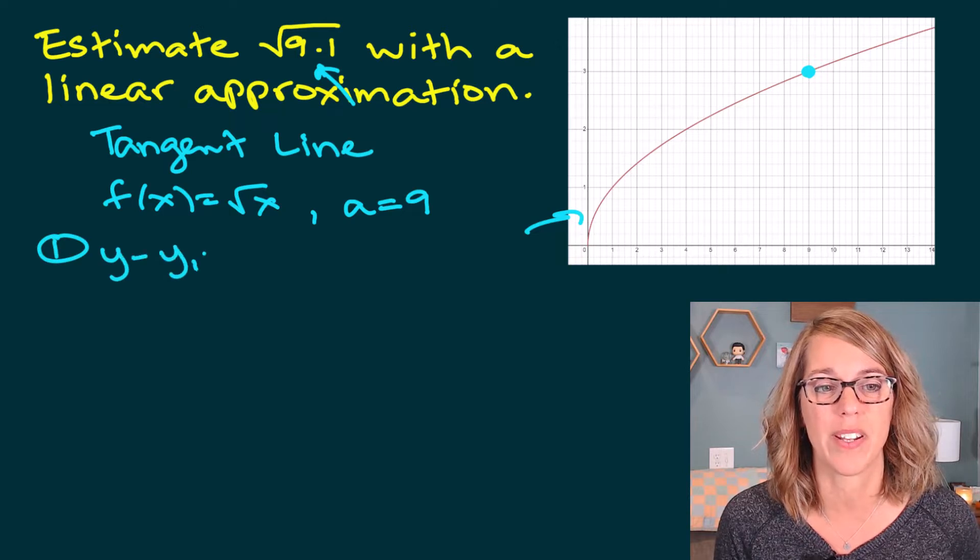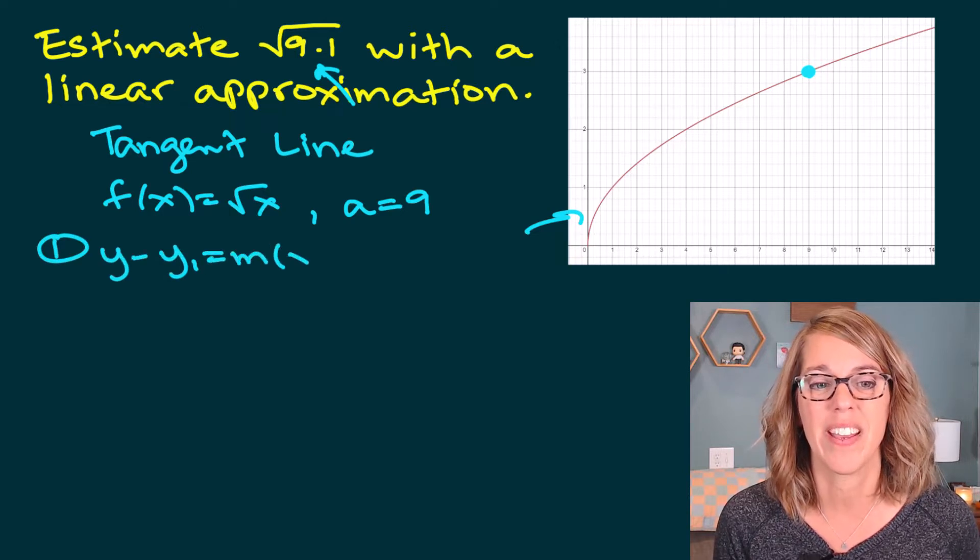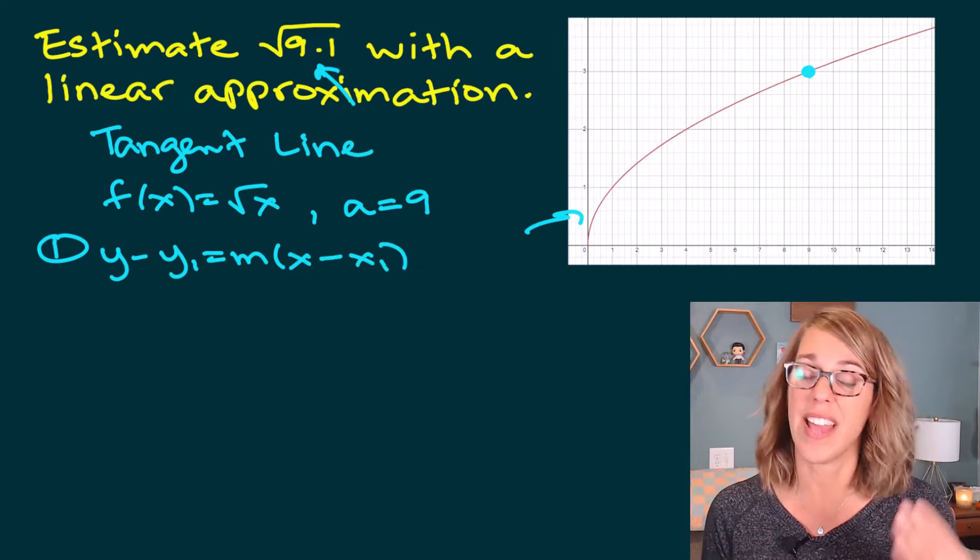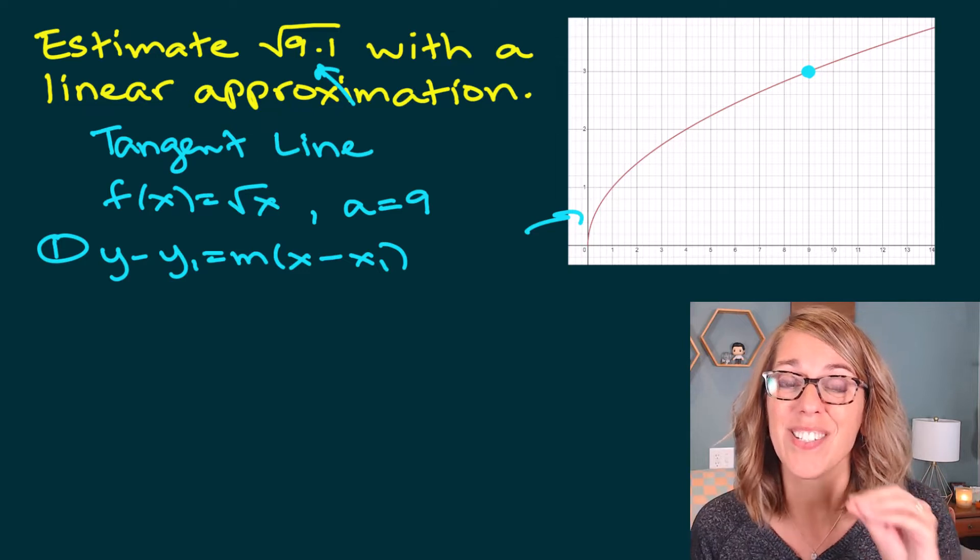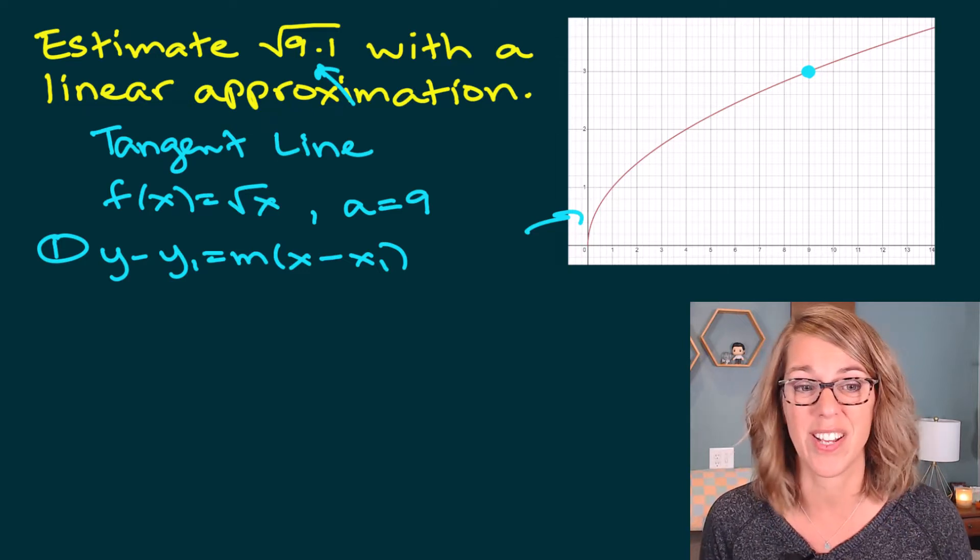I'm going to use point-slope: y minus y₁ is equal to m times x minus x₁. You might have a linear approximation formula, but believe me, it is really just this, just the equation of a line.